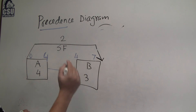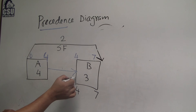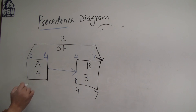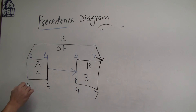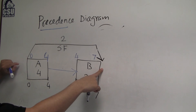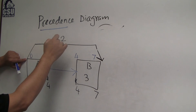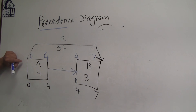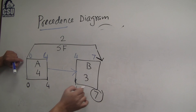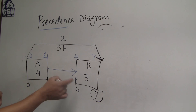Going back for the backward pass: it finishes at seven, takes three days. Following the finish-to-start relationship back: B's late start is four, A must finish so B starts — A finishes by four. If B starts at four and finishes seven, checking the start-to-finish constraint: B finishes seven, which is more than two days from A's start of zero. So both conditions are satisfied. Writing late start zero and late finish seven satisfies both this condition and this condition.